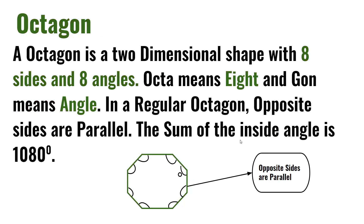An octagon is a two-dimensional shape with eight sides and eight angles. Octa means eight and gon means angle. In a regular octagon, opposite sides are parallel. The sum of the inside angles is 1080 degrees.